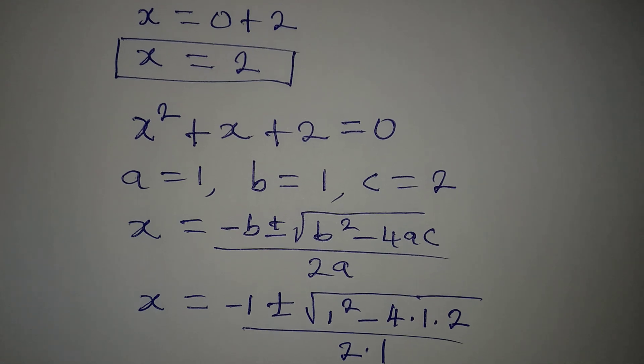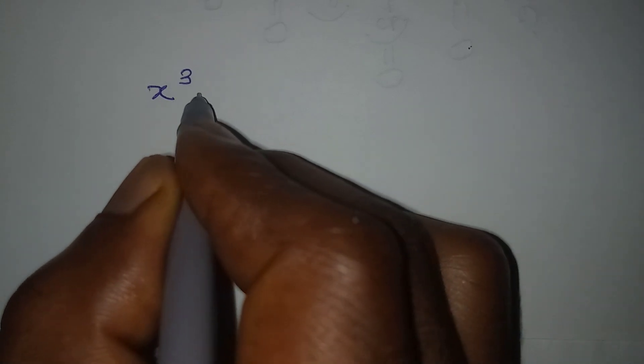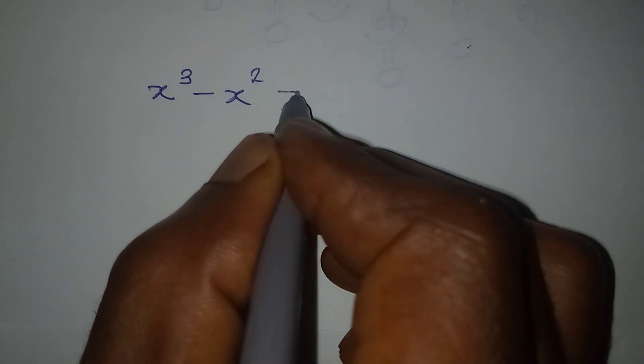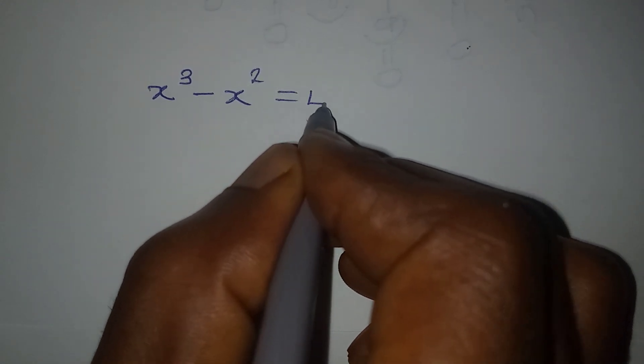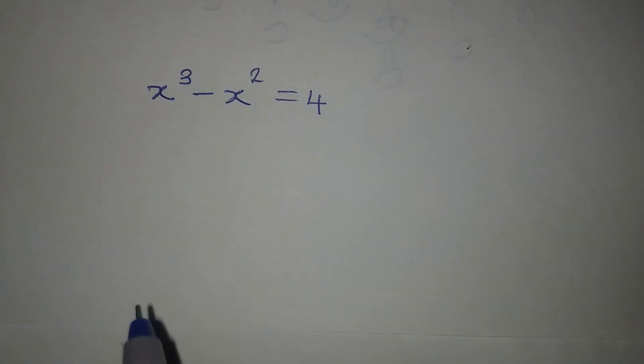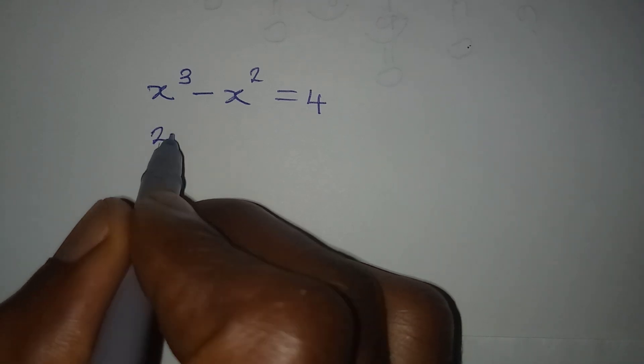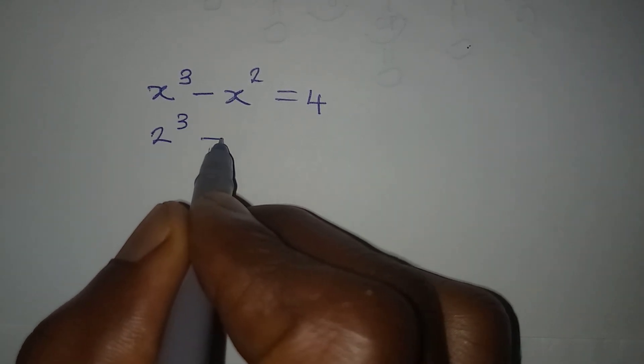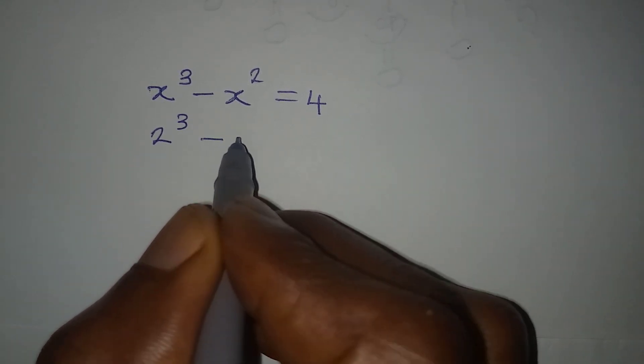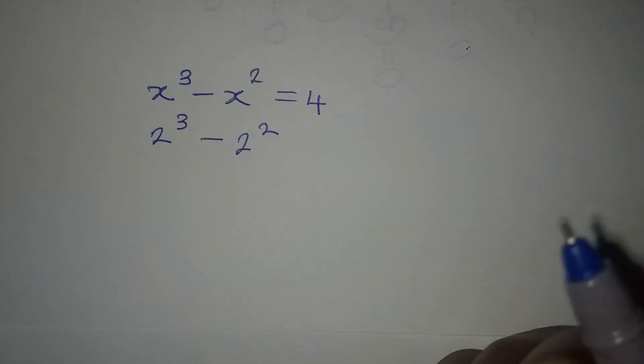Let's put x = 2 back into the original equation x cubed minus x squared equals 4. We get 2 to the power of 3 minus 2 to the power of 2.